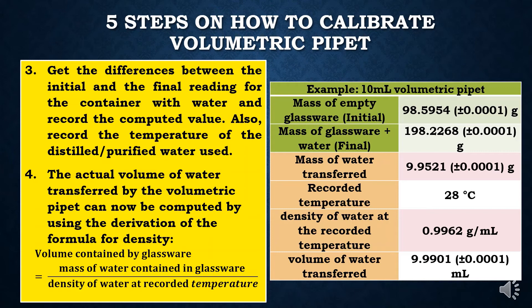Step 3: get the difference between the initial and the final reading for the container with water and record the computed value. Also record the temperature of the distilled or purified water used. Getting the difference between initial and final reading gives a computed mass of water of 9.9521 grams. The recorded temperature of water is 28 degrees Celsius.